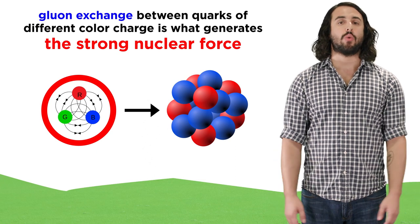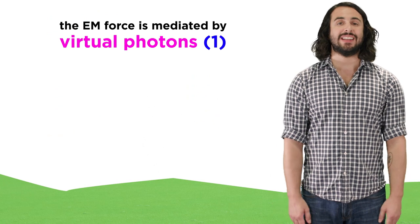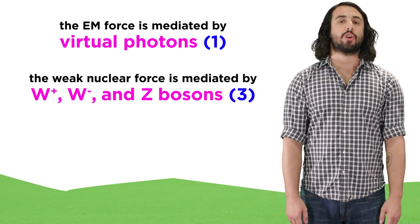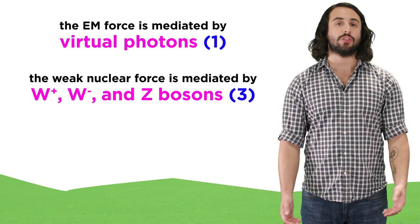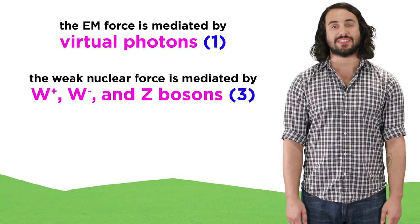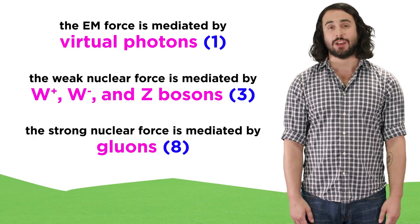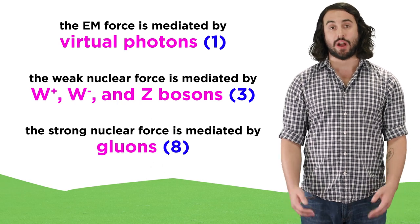We can see that our quantum field theories are getting more complicated, as QED needed just one particle, the photon. The quantum field theory that governs the weak nuclear force needs three particles in the form of W and Z bosons. But the strong nuclear force, as we said, requires eight gluons.